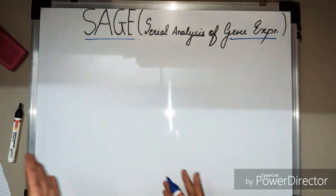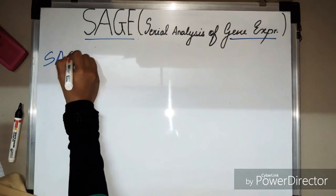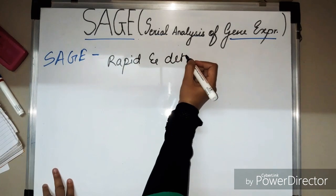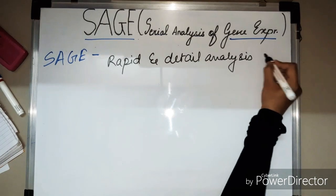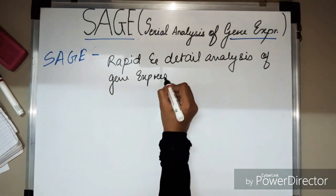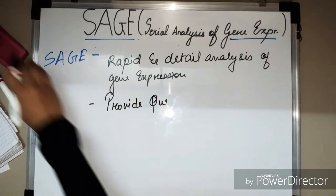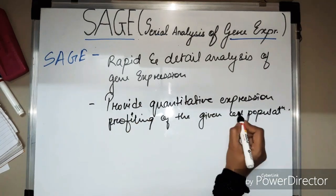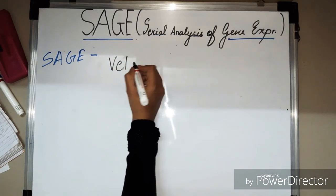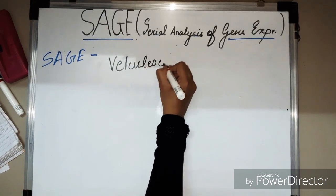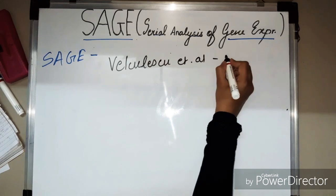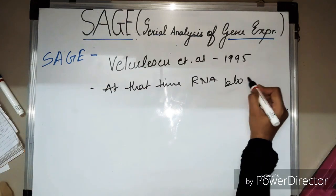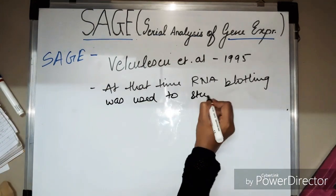SAGE is a technique that allows us to rapidly and in detail analyze the overall gene expression of a sample or cell of interest. SAGE also provides quantitative expression profiling of a given cell population. It was first invented and discovered by Velculescu et al. in 1995, at a time when RNA blotting was the technique used to study gene expression.